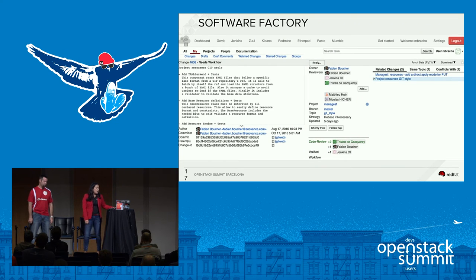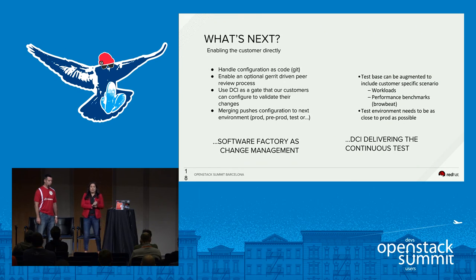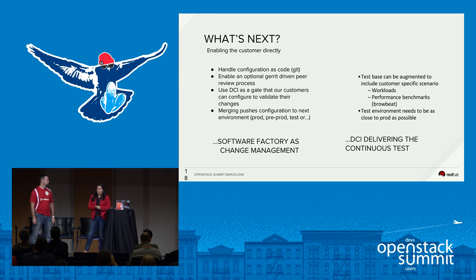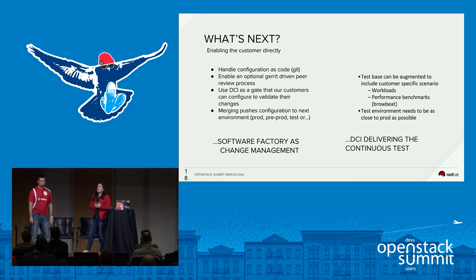This is the UI of Software Factory. If it looks a lot like Gerrit, it's because it is — it also leverages and integrates other tools that help you build your own patches or changes to OpenStack or into your own distribution. What's next: we want to enable customers directly, let them handle their configuration as code, give them a Gerrit infrastructure so they can build and test their code, and use DCI as a gate — testing and making sure it passes that CI gate before you commit a change. DCI then provides the continuous delivery of those changes, testing your workloads and leveraging the test cases you were already using.